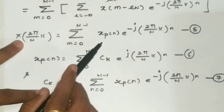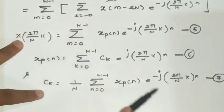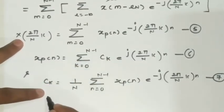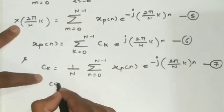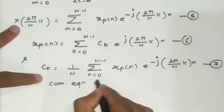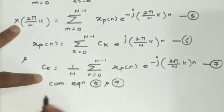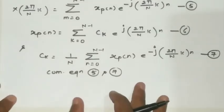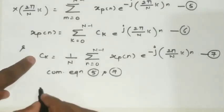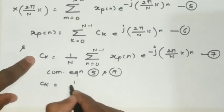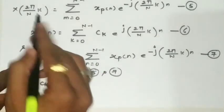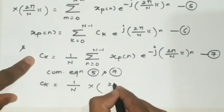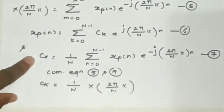Now we compare equations 5 and 7. The periodic signal x_p(n) appears in both, and the exponential term is negative in both. Comparing the two, we find that the Fourier series coefficient c_k is directly related to the sampled spectrum X(2π/N · k).